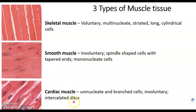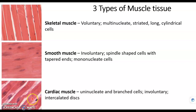Cardiac muscle has something that no other muscle tissue has, and that's intercalated discs. These are connections between cardiac muscle tissue cells that allow information to flow very quickly from one cell to another so that the cardiac muscle tissue can contract all together uniformly for an effective pump.